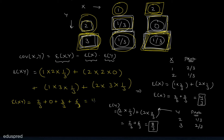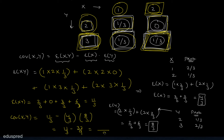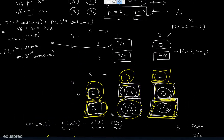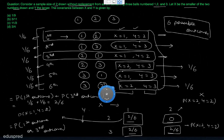Now it's straightforward to find the covariance. Cov(X,Y) = E(XY) - E(X)·E(Y) = 11/3 - (4/3)·(8/3) = 11/3 - 32/9. Taking the LCM: 33/9 - 32/9 = 1/9. So the covariance between X and Y is 1/9, which means the correct answer is option A.